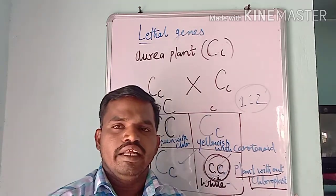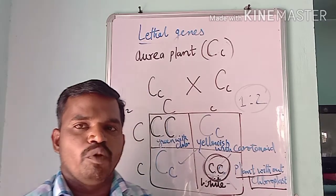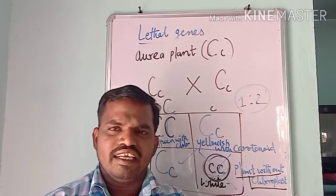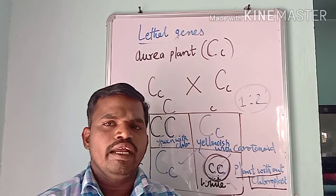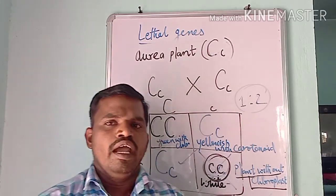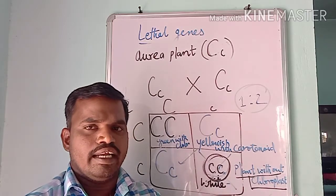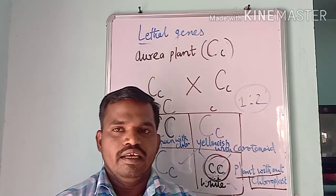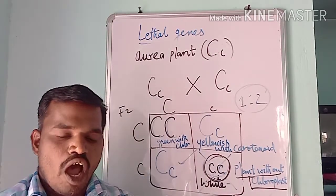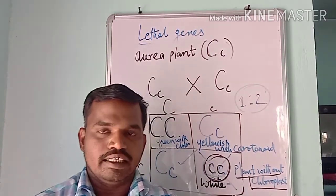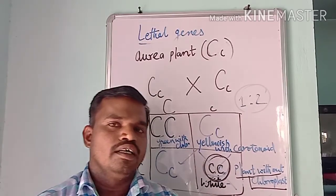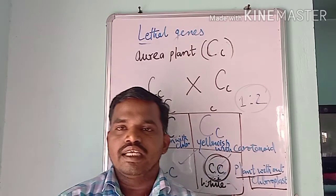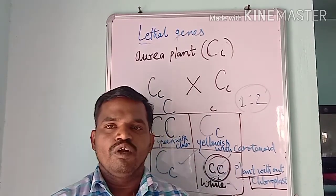Thank you for watching. In the next session, we will be discussing about intergenic interactions — elaborately discussing epistatic genes and epistatic interactions, including squash fruits getting yellow and green colors. We will also discuss polygenic inheritance with kernel weeds.